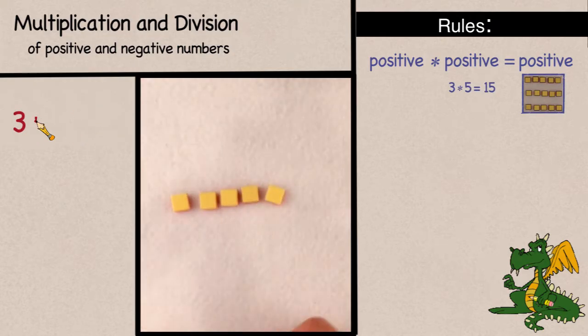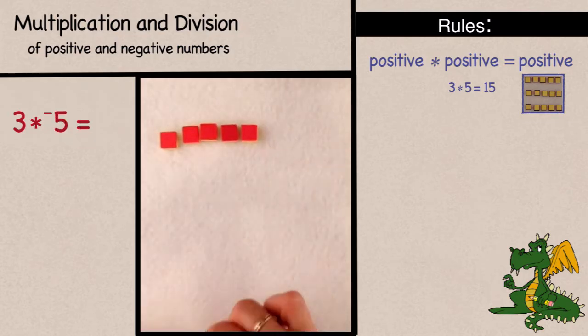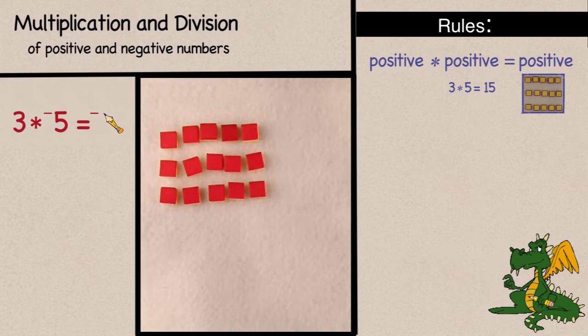So what if I had 3 times negative 5? Well, that would be 3 sets of negative 5, or negative 15.